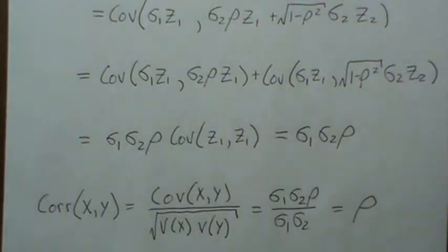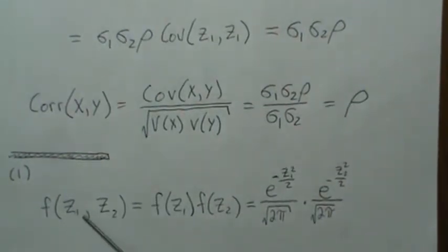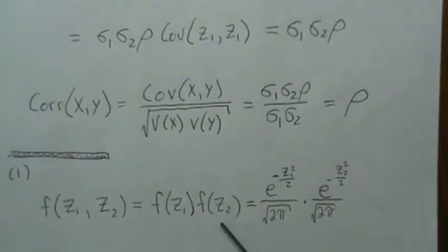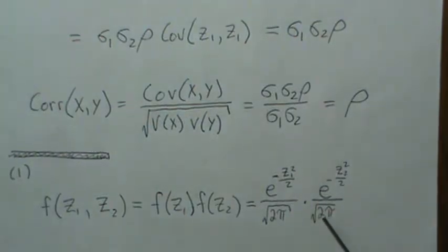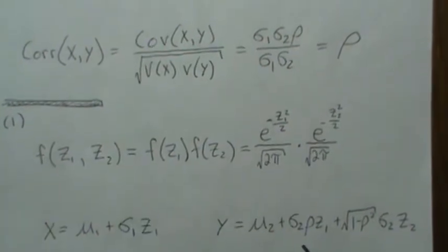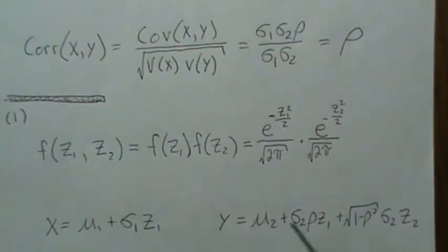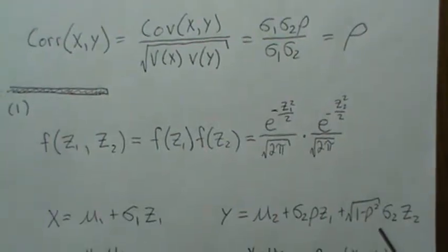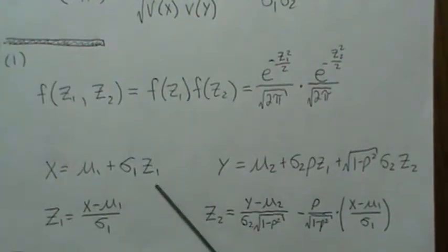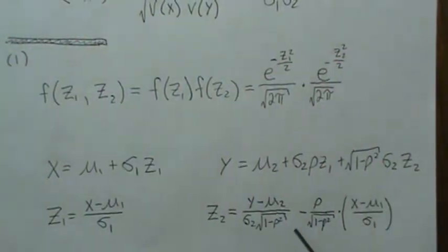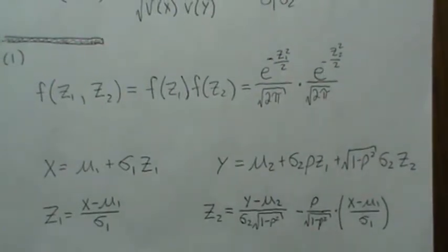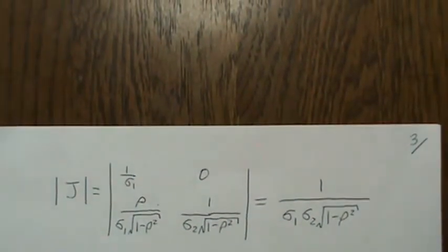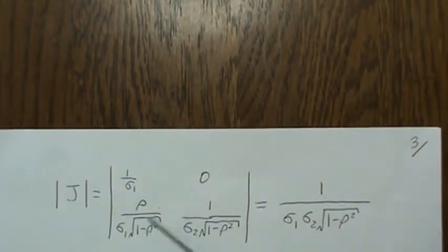Now let's find the actual density of a bivariate normal. Starting with z1 and z2, they're independent, so we can separate them into a product. Since these are standard normal random variables, we write out their densities. We define the transformation x and y as before, then back-solve for z1 and z2. z1 is straightforward; z2 is a bit more involved. We then compute the Jacobian, take its absolute value, and find the determinant. Since rho squared is between zero and one, this is positive.